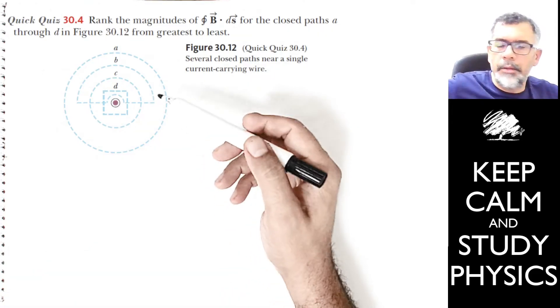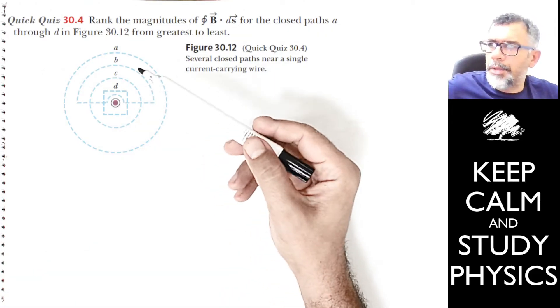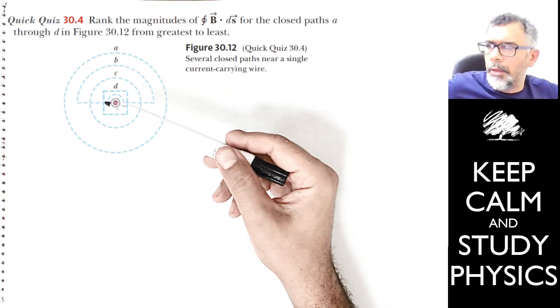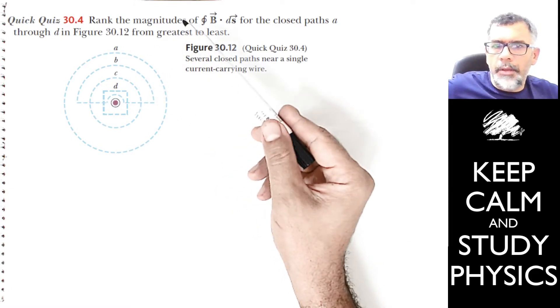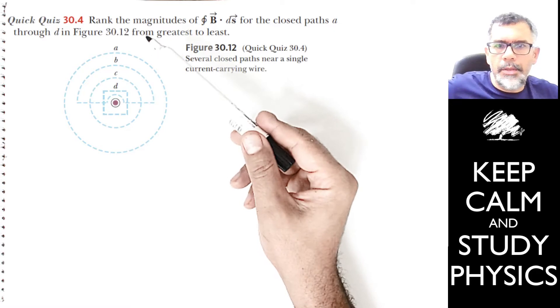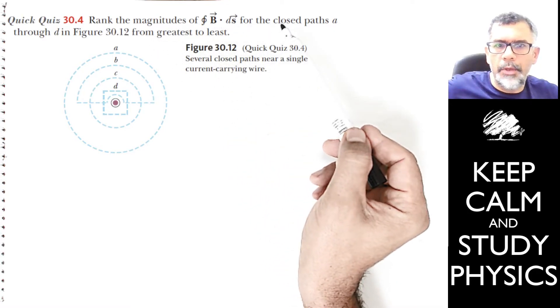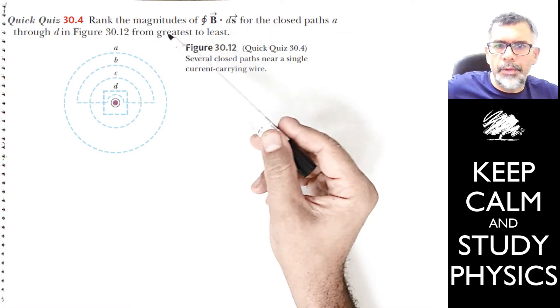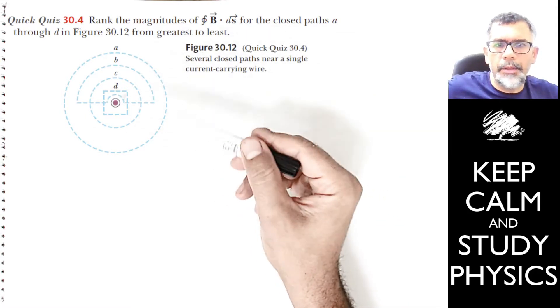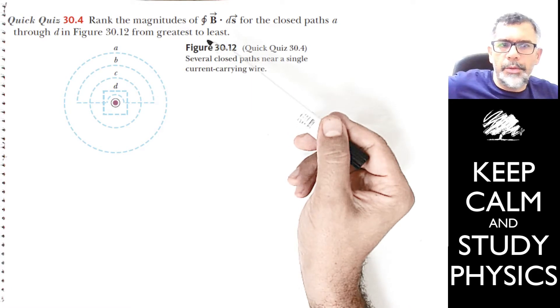Okay, so let's look at another question about Ampere's law. The question is to rank the magnitudes of the path integral B·dS for the closed paths A, B, C, and D from greatest to least.